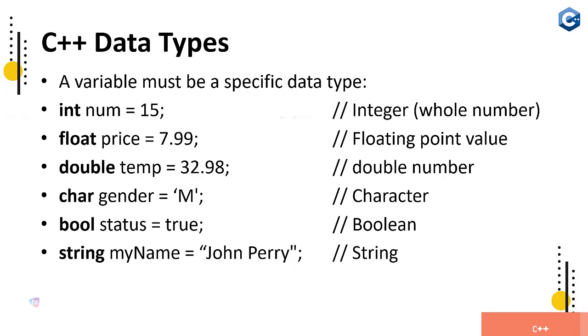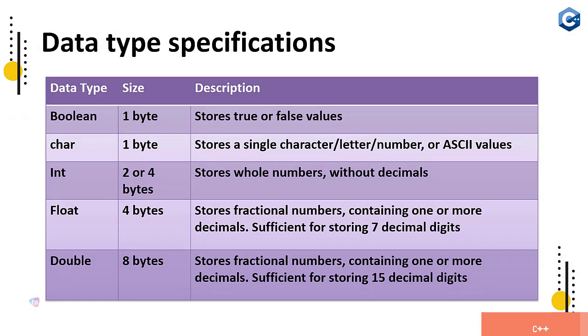Now going to the specifications - what is the range, how many characters we can store, what is the data range. Let's begin: Boolean is one byte of storage from memory, and stores true or false values.